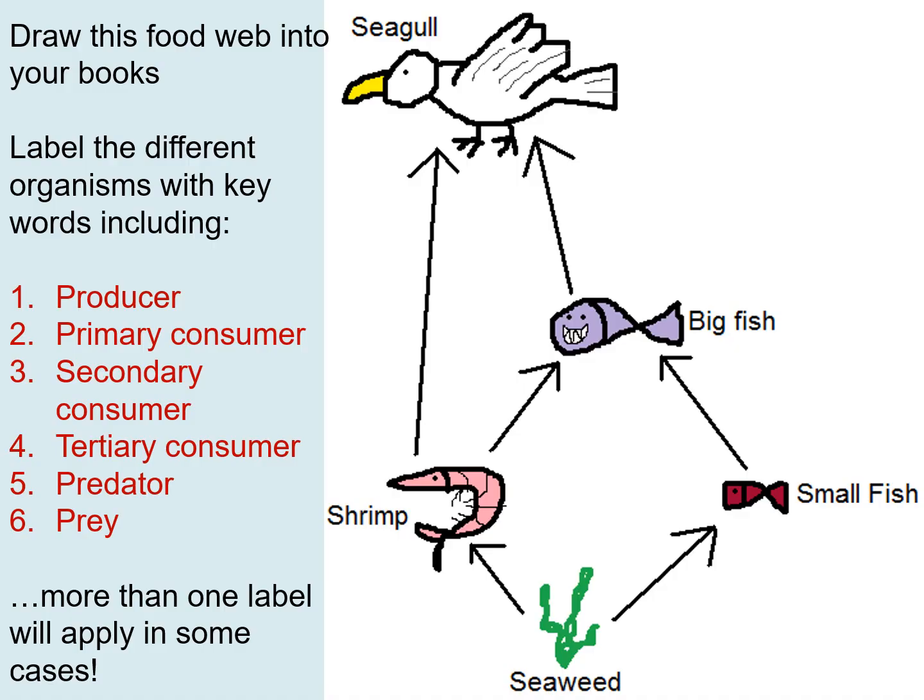Here's your next task. I'd like you to draw this simple food web into your books — if you don't want to do the drawings you can just write the names. Then label each organism with numbers relating to these keywords: one through six, covering producer, primary consumer, secondary consumer, tertiary consumer, predator, and prey. Bear in mind that more than one label will apply in some cases. Pause the video, draw the food web, and label the organisms using the numbers.